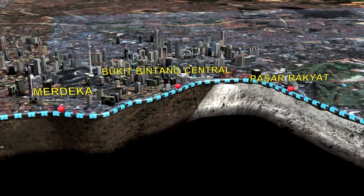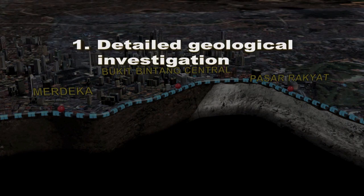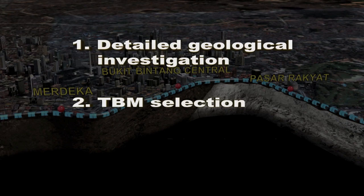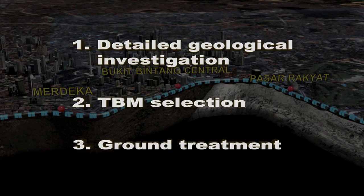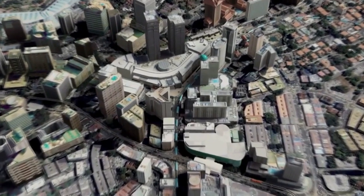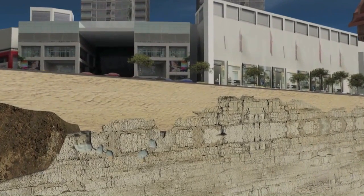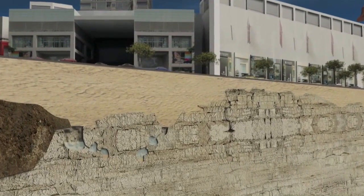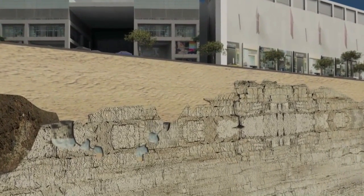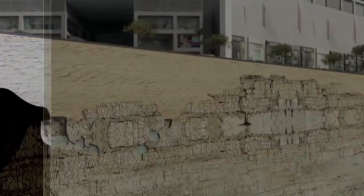Kuala Lumpur Limestone is known to be highly karst. The answer to tunnelling in highly karst limestone formation is a combination of detailed geological investigation, TBM selection process, and ground treatment. Ground treatment such as jet grouting, compaction grouting, and fissure grouting will be performed at areas with weak ground strata and to fill cavities.